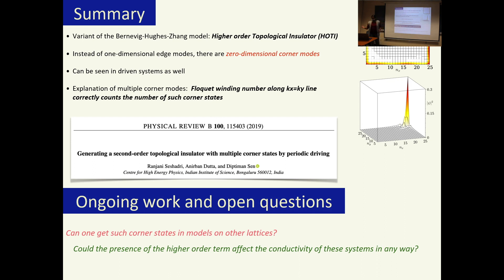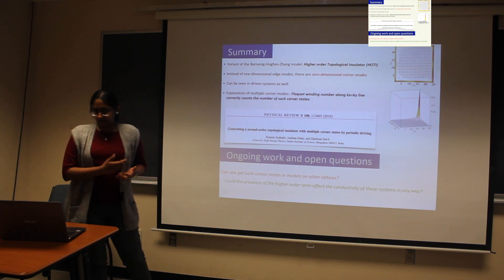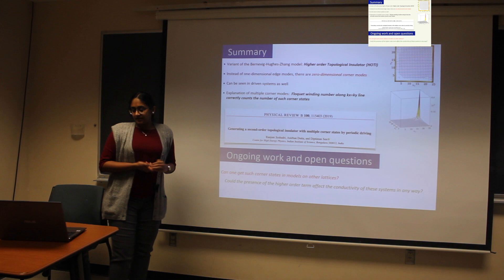So to summarize, we start with a variant of the BHZ model, and this variant is what gives rise to a higher order topological insulator. At equilibrium, instead of 1D edge modes, there are zero dimensional corner modes. Now if we go away from equilibrium, so we drive the system and vary the mass term here, we get corner modes again even though the corresponding equilibrium system does not have these zero dimensional modes. Also, there can be multiple corner modes, that is each corner can have more than just one corner mode, and these multiple corner modes can be explained by the Floquet winding number along the diagonal kx equal to ky in the Brillouin zone.